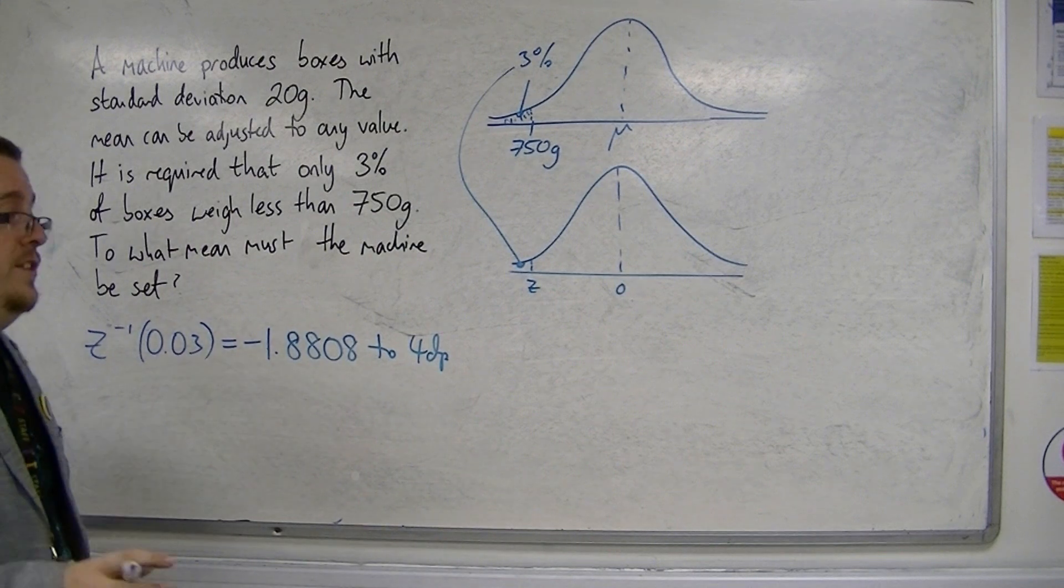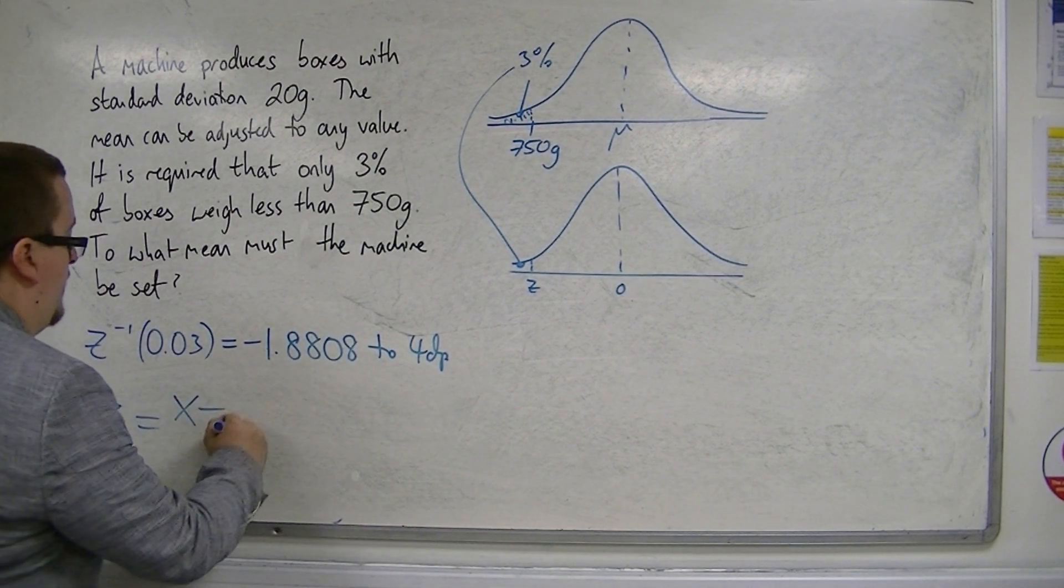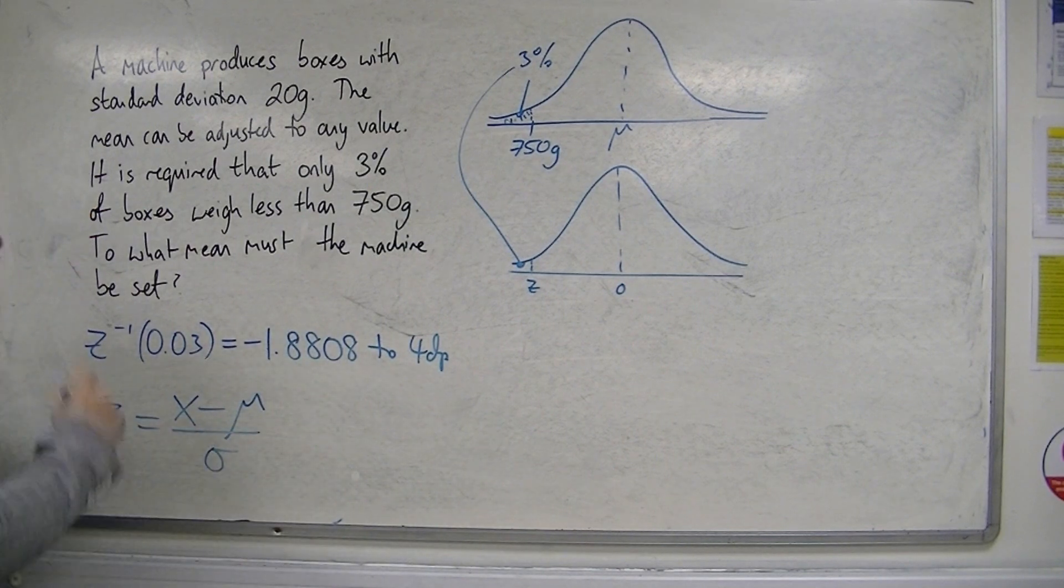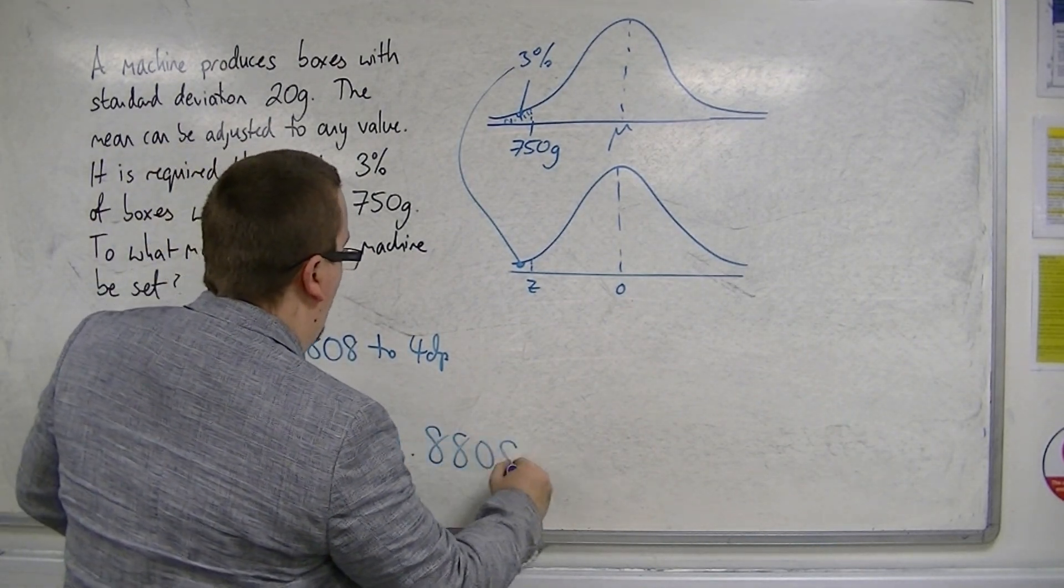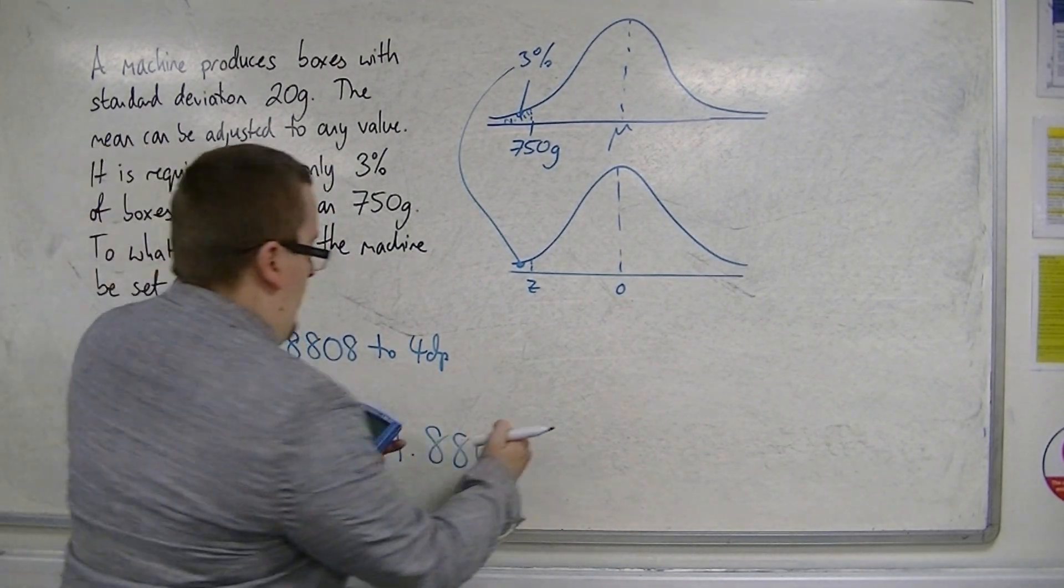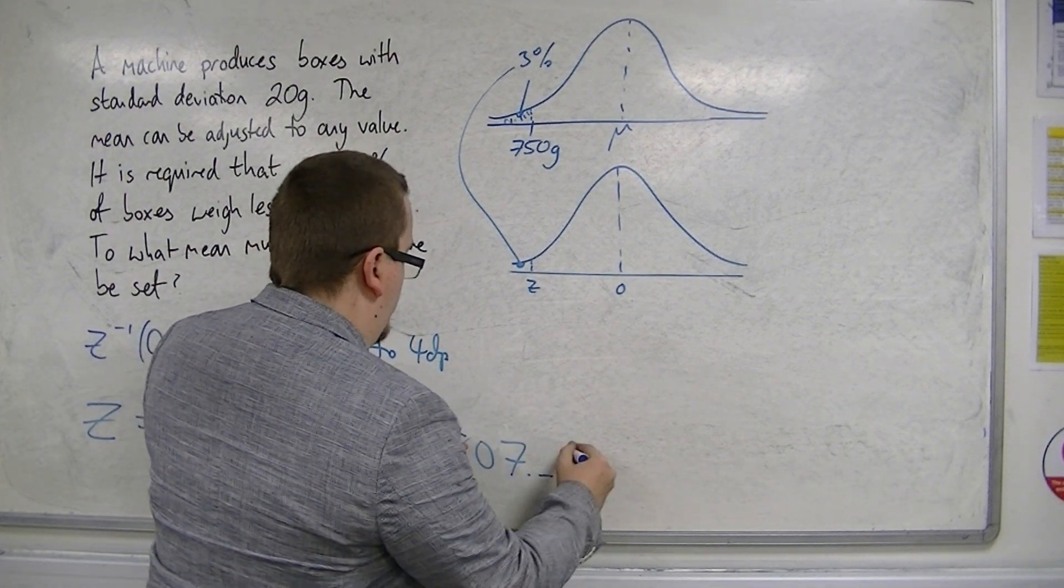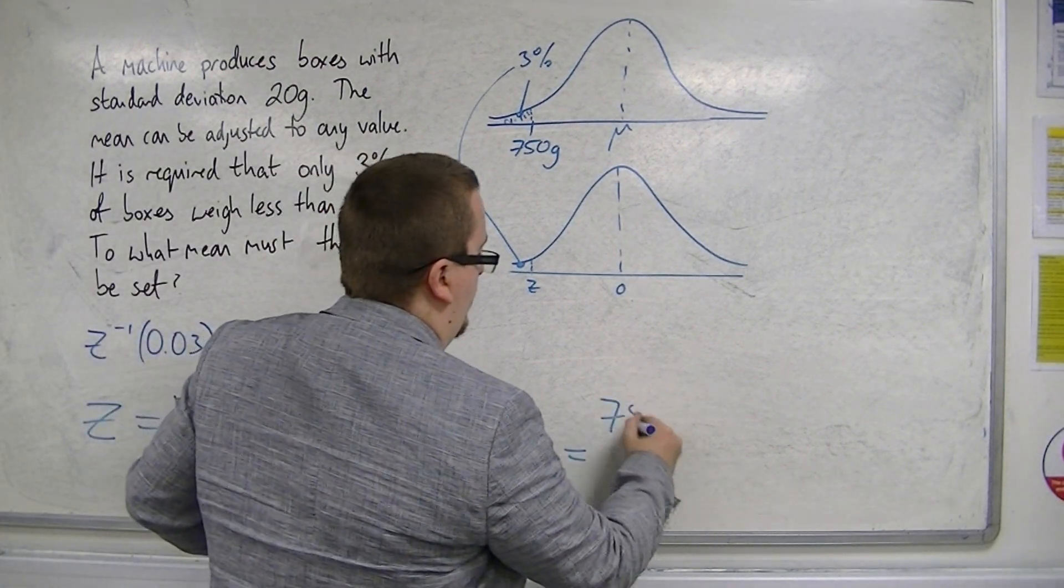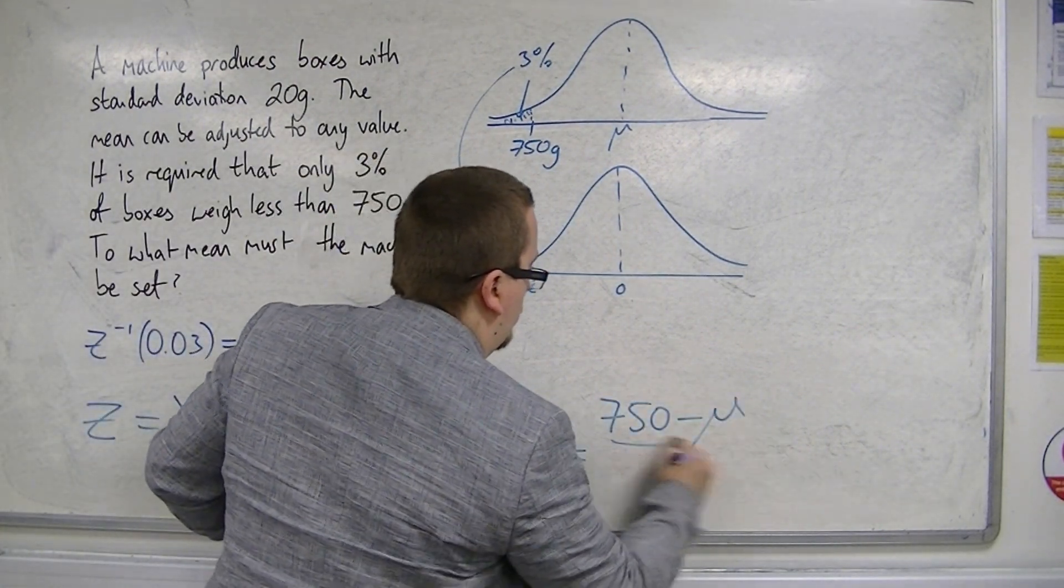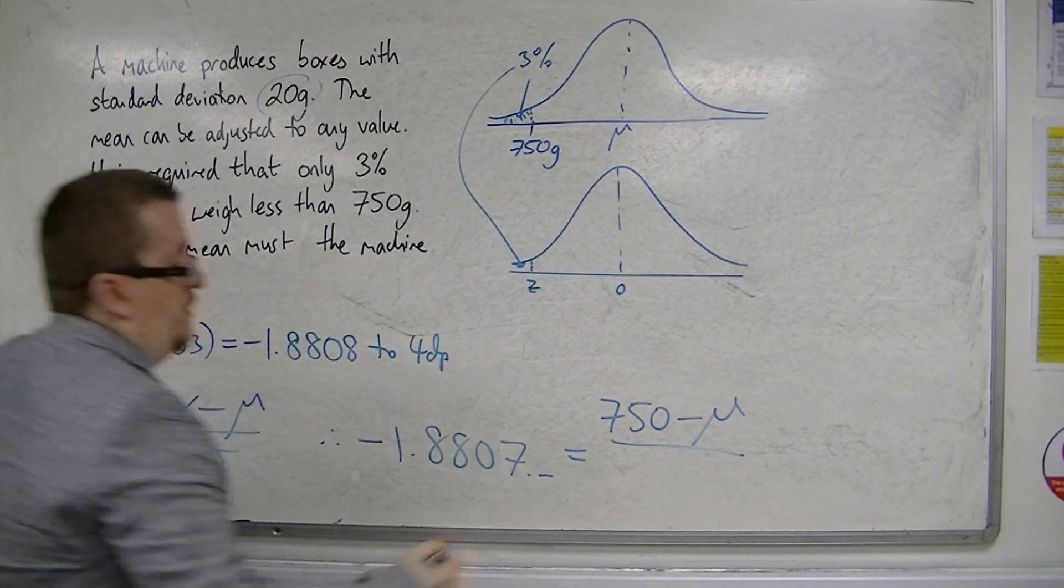Now I can use the formula z equals x minus mu over sigma. We have minus 1.8808, I'm going to use the full display. That equals x, which is 750, take away the mean, which is what I want, divided by the standard deviation, which was 20.